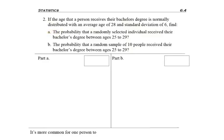But in part A, we're asked to find the probability that a randomly selected individual receives their bachelor's degree between the ages of 25 and 29. So as I always like to do, I draw my bell-shaped curve centered over 28 just so I have a bearing that 25 is to the left of it and 29 is to the right of it.